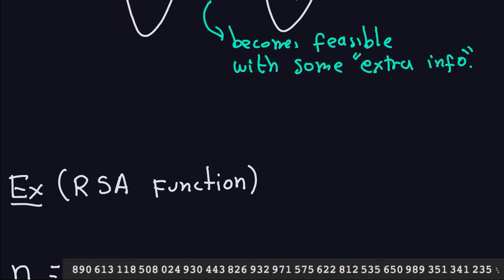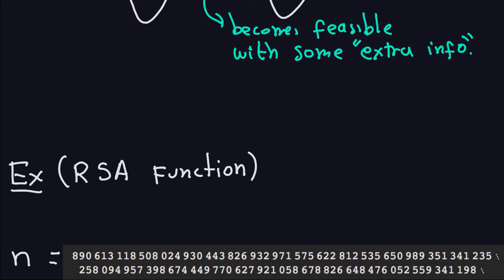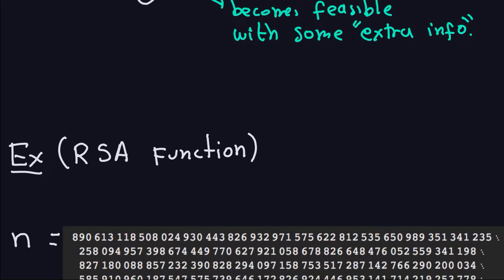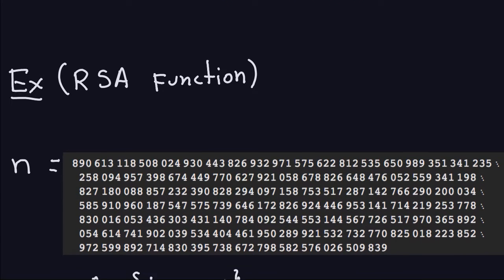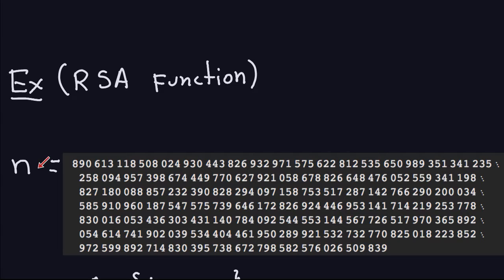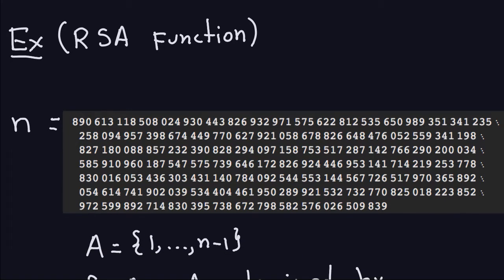Let me give you an example here of a trapdoor one-way function. Now this example I'm going to give you is an example we talked about I think in part three of this sequence of videos of one-way functions, and this was the RSA function which is a strong candidate for one-way function. So let's recall a little bit of the information from that example. So I have my number n, which is this large number that you see here, which is actually the product of two large primes. The set A is this set from one to n minus one, where this is my n.